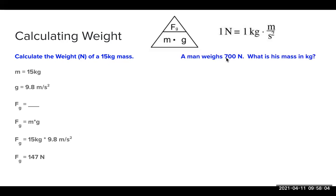Let's look at one more. We have a man who weighs 700 Newtons. What is his mass in kilograms? So we list out our known variables. Our F_g is 700 Newtons, and G is going to be acceleration due to gravity on earth, 9.8 meters per second squared. We're solving for mass.